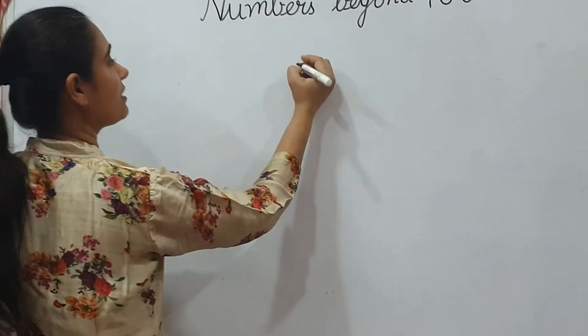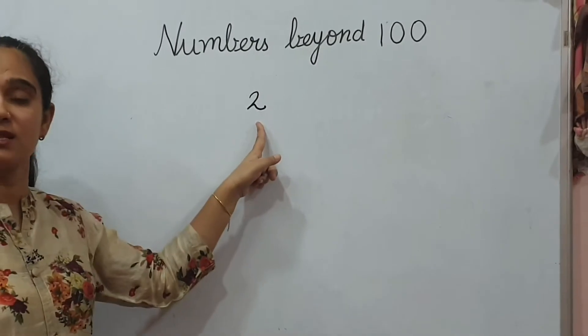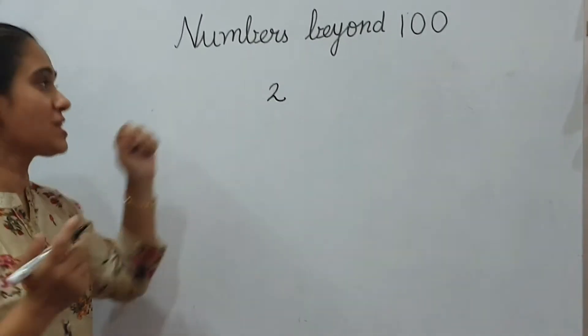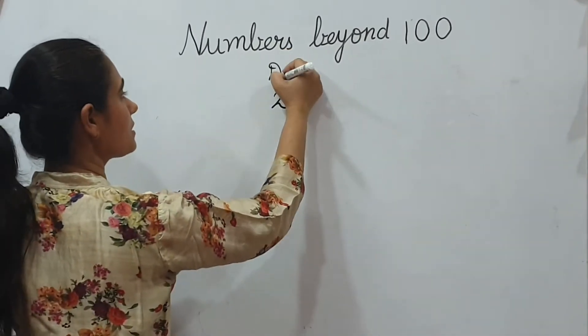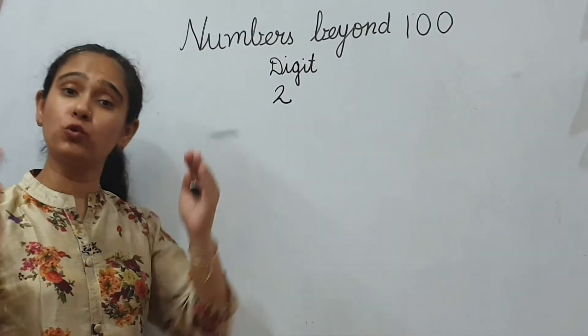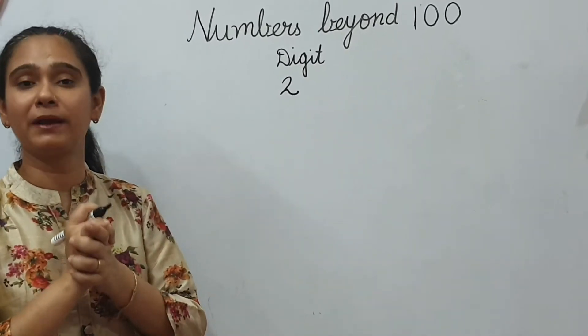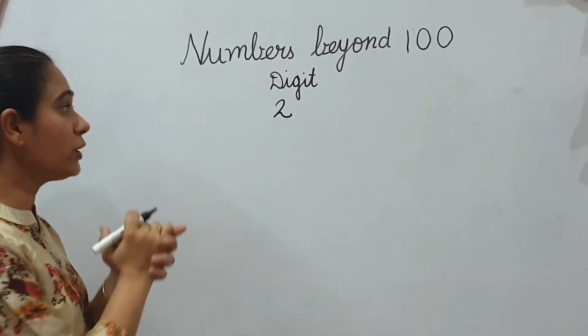Now, firstly I want to ask one question from you. What is 2? Is this digit or number? This is digit. This is digit. If 2 digits or more than 2 digits comes together, then it will become number. I told you earlier.